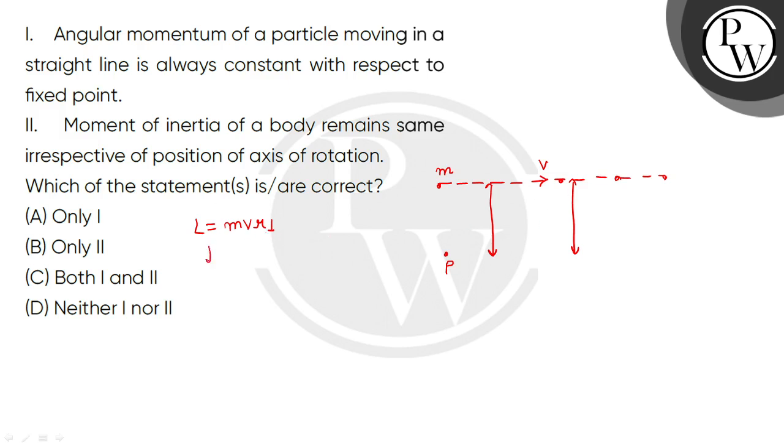The angular momentum will remain constant with respect to fixed point. So we can say that angular momentum will remain constant with respect to fixed point. So this is our statement. If the angular momentum of the particle moves in straight lines are constant with respect to fixed point, so the option of statement 1 will be correct.